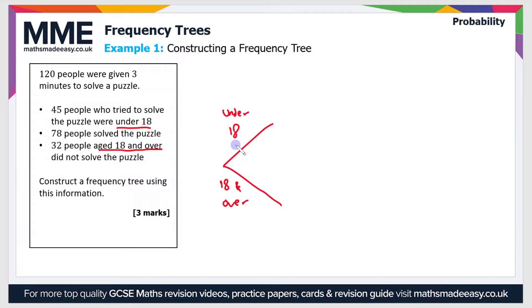Now the question says that 45 people who tried to solve the puzzle were under 18, so that means we can put 45 at the end of the first branch. It also says in the question that there's 120 people in total, so that means the remaining people must be 18 and over. We can get that by doing 120 minus 45, and that is 75.